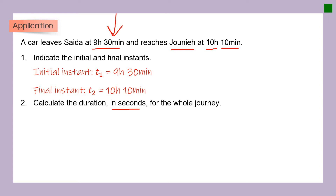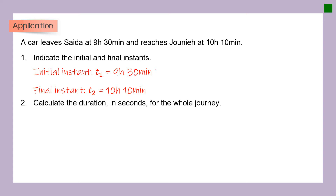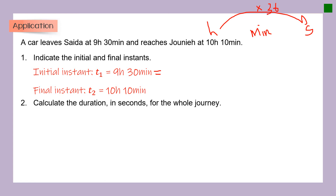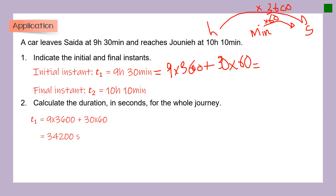The best way to find the duration when we have time like this is to convert both instants into seconds first. From hours to seconds, multiply by 3,600; from minutes to seconds, multiply by 60. So t1 equals 9 times 3,600 plus 30 times 60, which gives t1 equals 34,200 seconds.